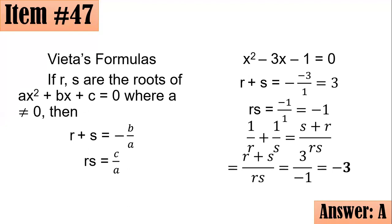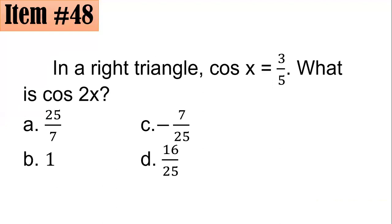Moving on to item number 48. In a right triangle, cosine x equals 3/5. What is cosine 2x? Is it 25/7, 1, -7/25, or 16/25?